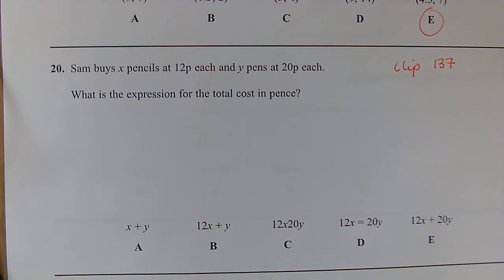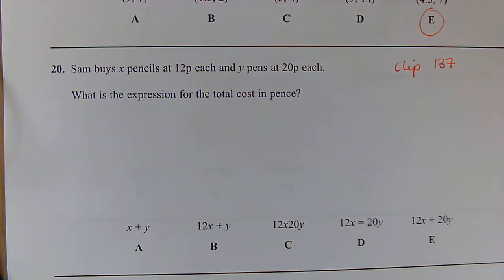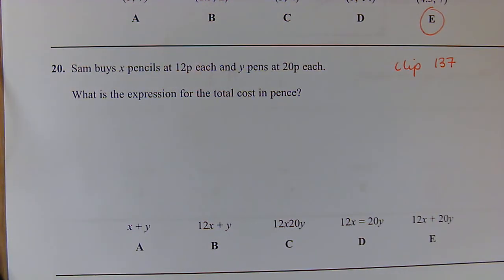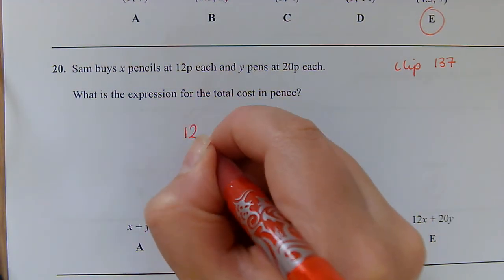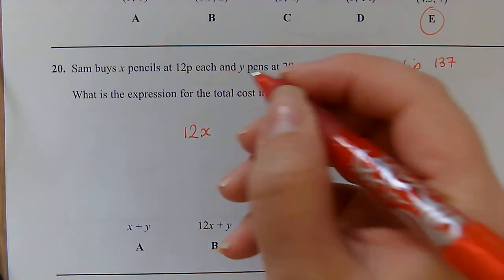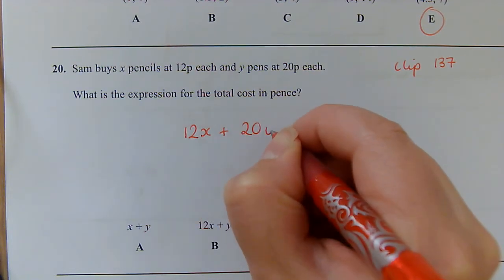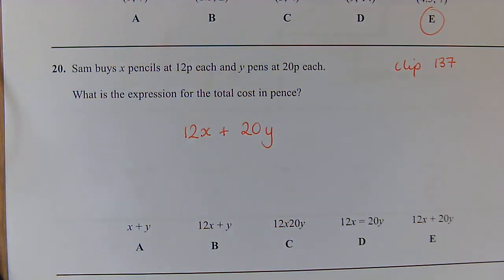Question 20: Forming expressions now. So Sam buys x amount of pencils at 12 pence and y amount of pencils at 20 pence. What is an expression for the total cost? So we have 12x plus 20y, so 12x plus 20y is E.